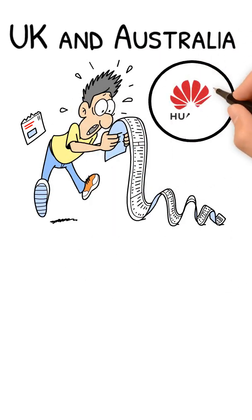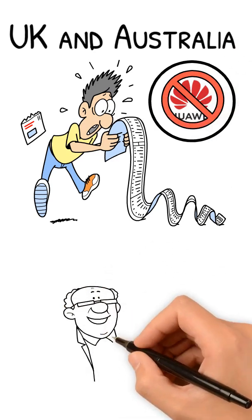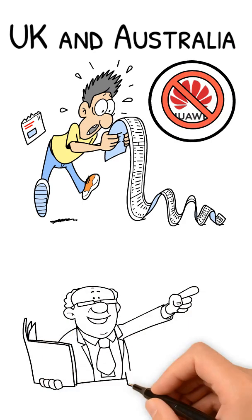For Huawei, it wasn't just a PR crisis. It was a global blockade. Access to chips, software, and global markets was suddenly restricted. Its smartphone business was hit hard.